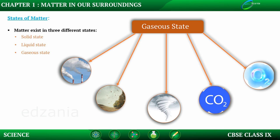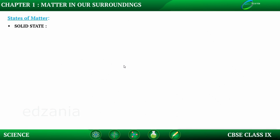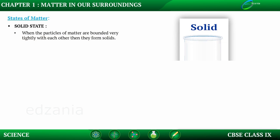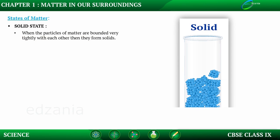We are going to learn in detail about these three states in the coming section. Now, what is solid state? When the particles of matter are bounded very tightly with each other, then they form solids. Matter is made up of small particles, and when these particles are bounded very tightly with each other, they form solids.